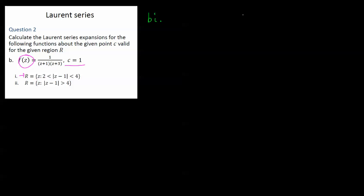We're looking at question B part I. The first thing to start with is a graph — if you're not drawing graphs, you're going to make errors. We have a singularity at negative 1 and a singularity at negative 3. The first thing is to locate your singularities. The next thing is to realize the point we're expanding about, which is the point 1.